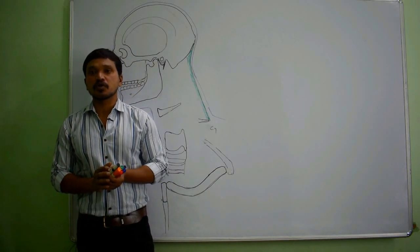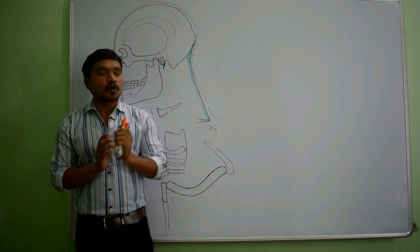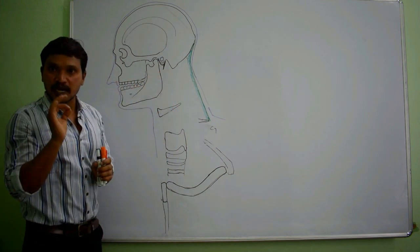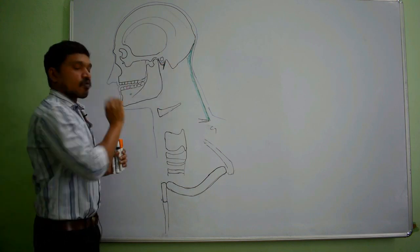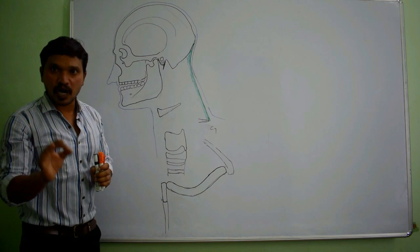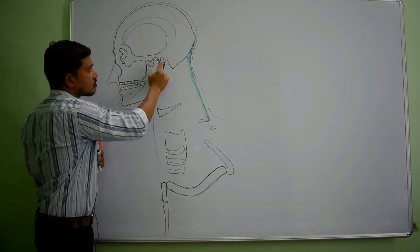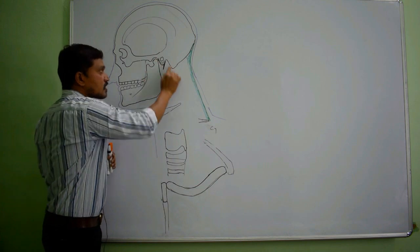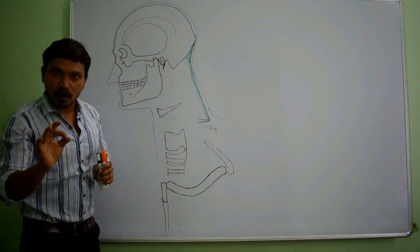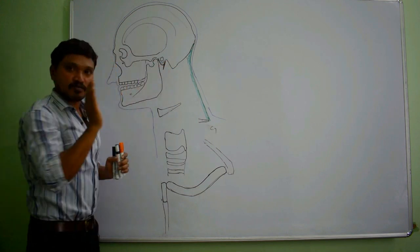In this session, we are going to study about the parotid gland. Before going to study about the parotid gland, we should know where it is located. This is the area where the parotid gland is located — what we call the parotid region, parotid mould, or parotid bed. First, we should know what are the boundaries of this region.